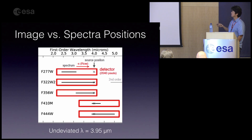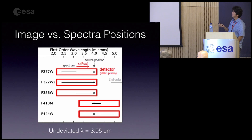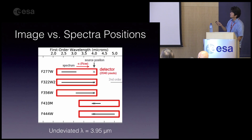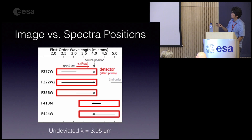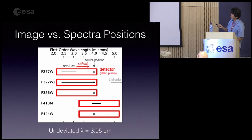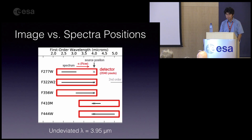Schematically, the undeviated point wavelength is 3.95 microns, roughly 4 microns. So 4-micron light goes straight through the GRISM without dispersion. The GRISM disperses light over the range from 2.4 to 5 microns. Depending on where you place the source — for example, at one edge of the detector — this is how the dispersed light falls onto the detector. The wavelength direction in the diagram is shown going up to the right, but in actual detectors it is the opposite direction.